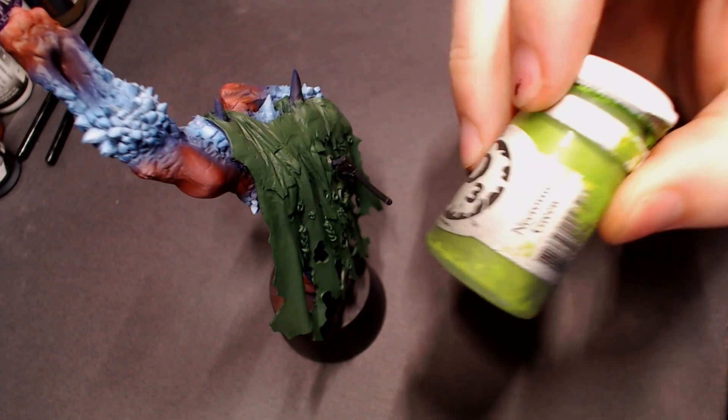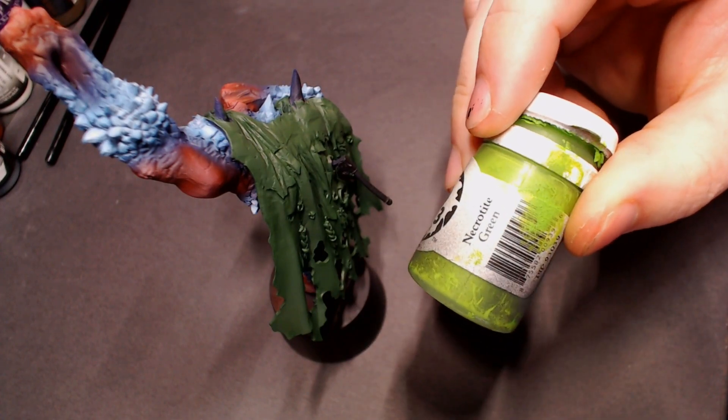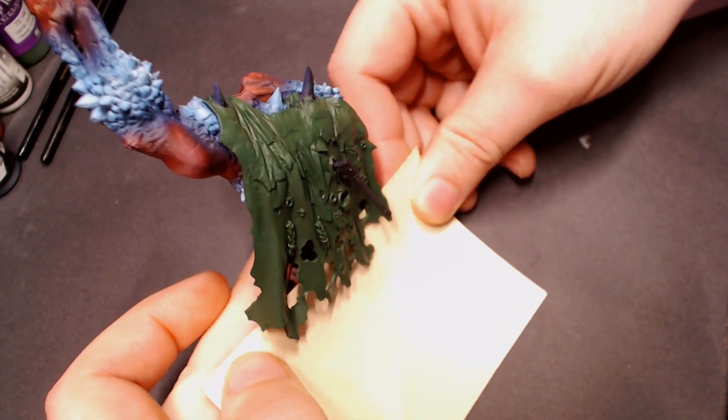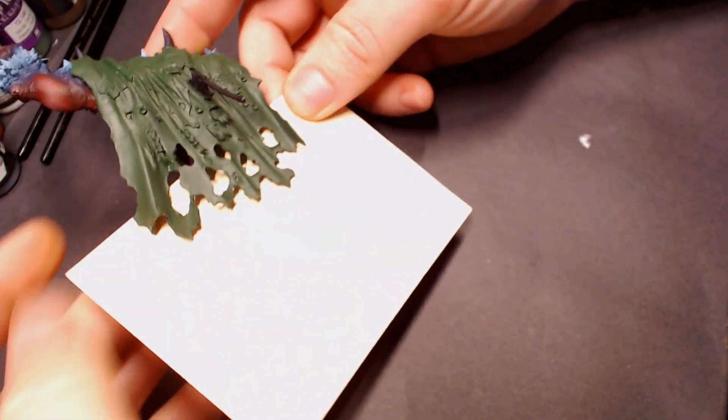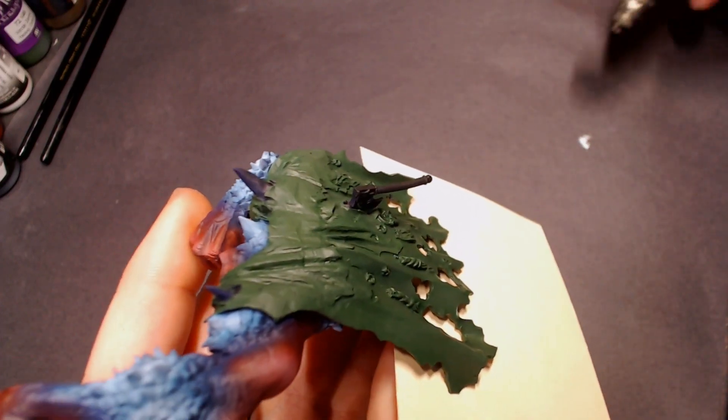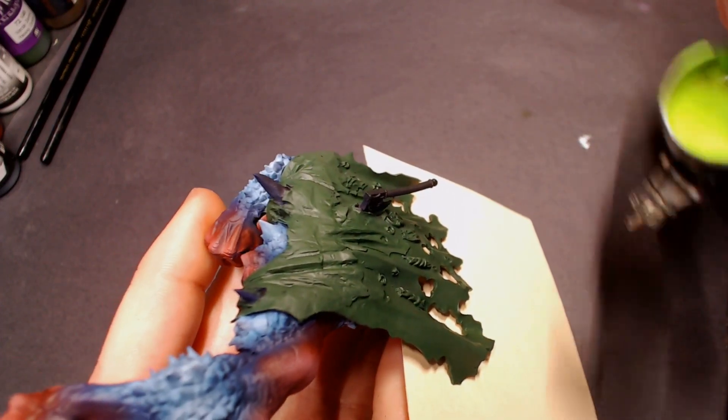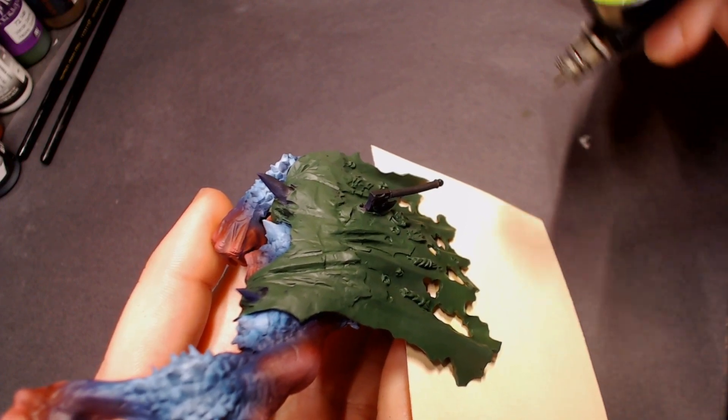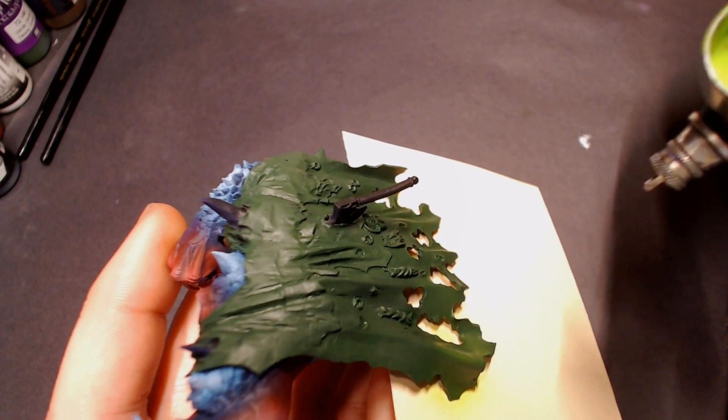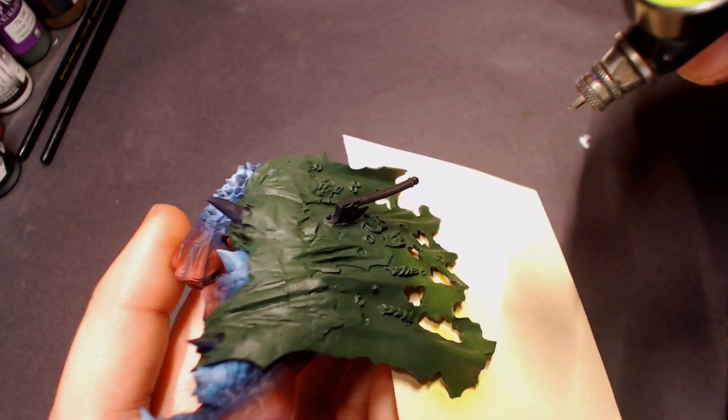So after I get that cape base coated in by hand, I'm going to pull out some necrotite green, get that in the airbrush with some flow improver, and then I've got this little piece of cardstock. This is actually the little backing to a sticky notepad, and I'm just going to work that underneath the cape to cover up those holes so that I can airbrush on it without worrying about the paint going through those little holes in the cape and getting on the back of his legs in his butt area.